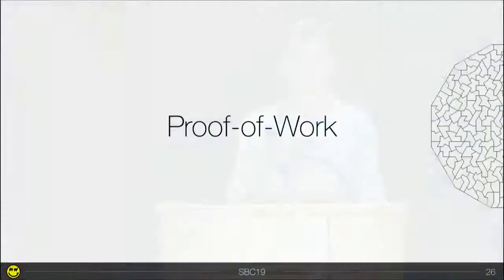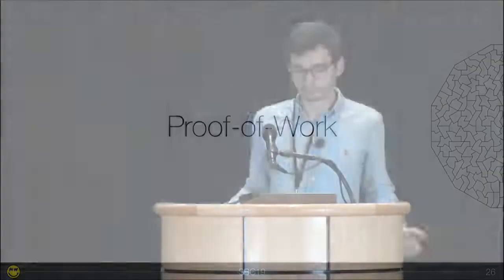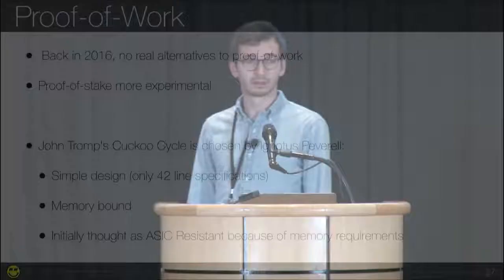The second building block is the proof of work — the consensus algorithm. Every cryptocurrency needs that. To understand why Grin used this specific proof of work, we need to go back to 2016. Back then there was no real alternative to proof of work, and proof of stake was really experimental at that time. Since the beginning of Grin, John Tromp's Cuckoo Cycle was chosen as the Grin proof of work. At that time there were three reasons: it's a simple design — only a 42-line specification — it's memory-bound, and it was initially thought to be ASIC-resistant.